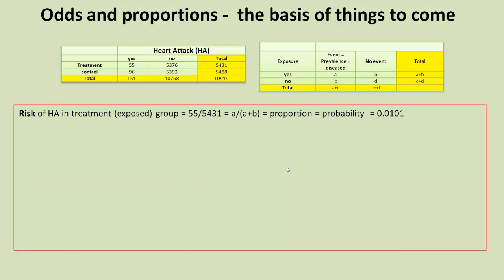So, let's look at our first measure. Consider first the risk of a heart attack in the treatment or exposed group. So, that is simply 55 divided by the total in the group, which is 5,431. And that equals a proportion. So, proportions are, in effect, probabilities. And we get about 1%.